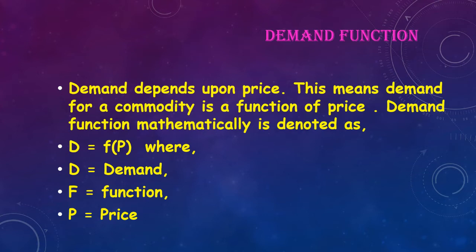Demand function: demand depends upon price — price is the major determinant of demand. This means demand for a commodity is a function of price. Mathematically it is denoted as: D = f(P), where D is demand, f is function, and P is price.